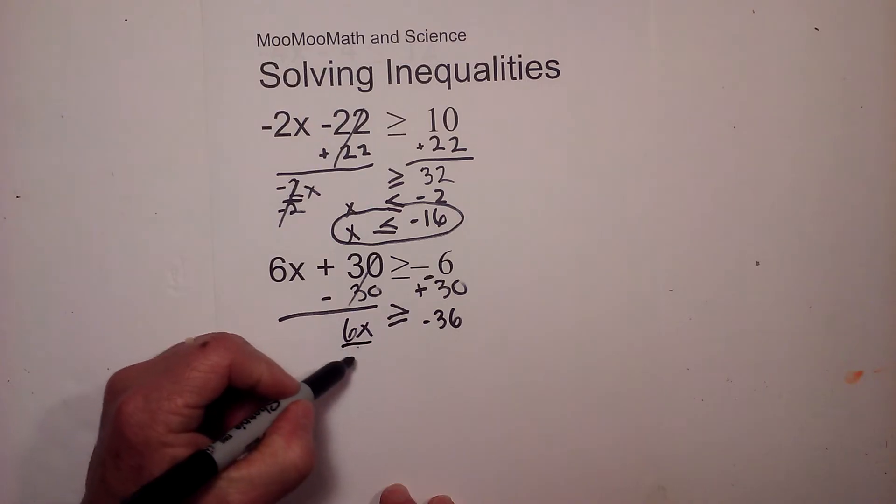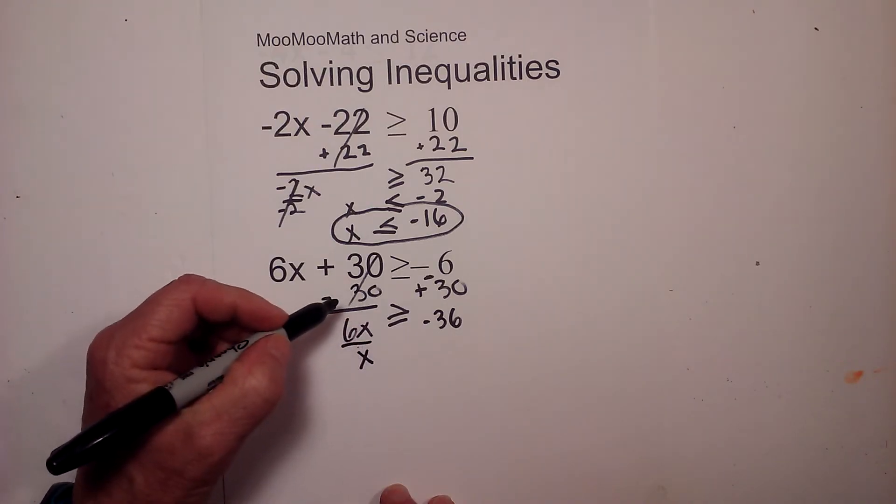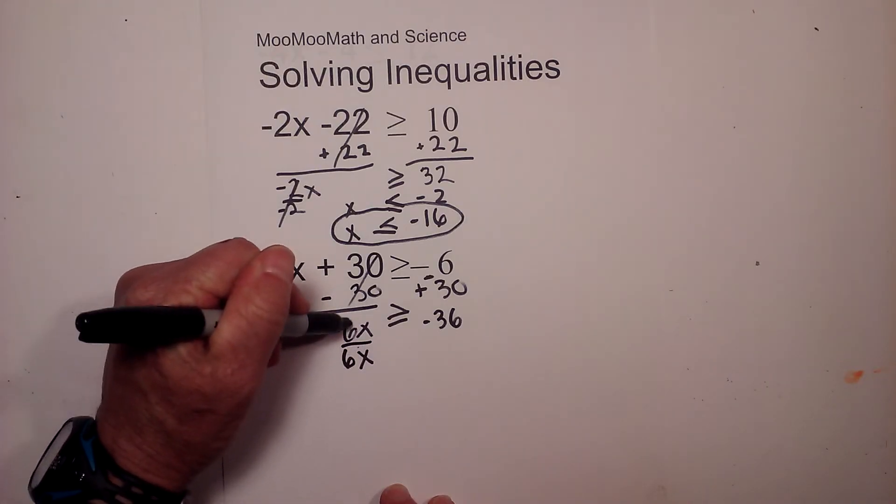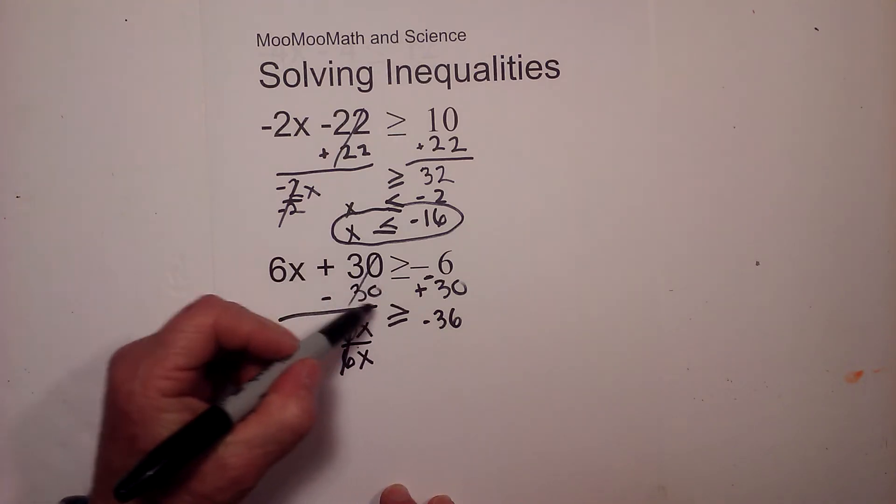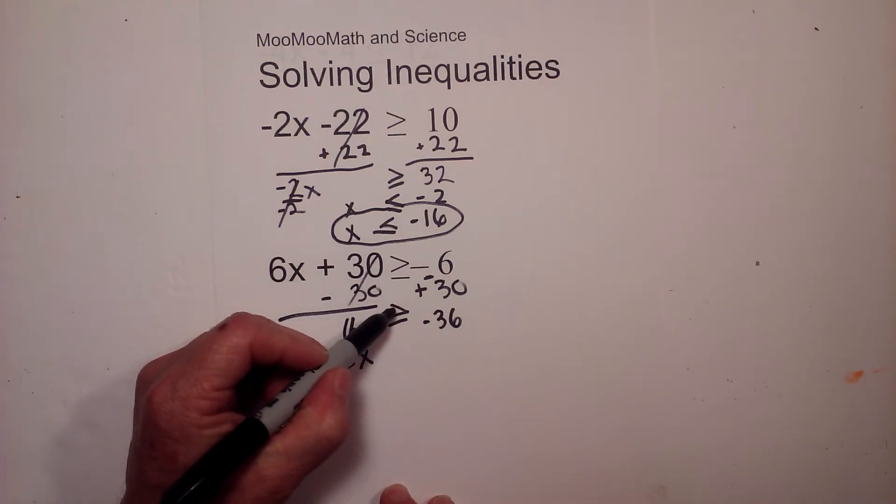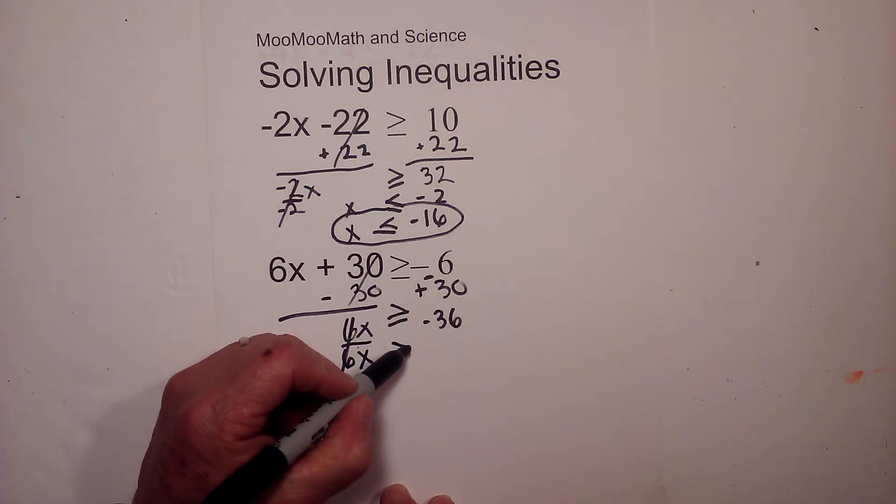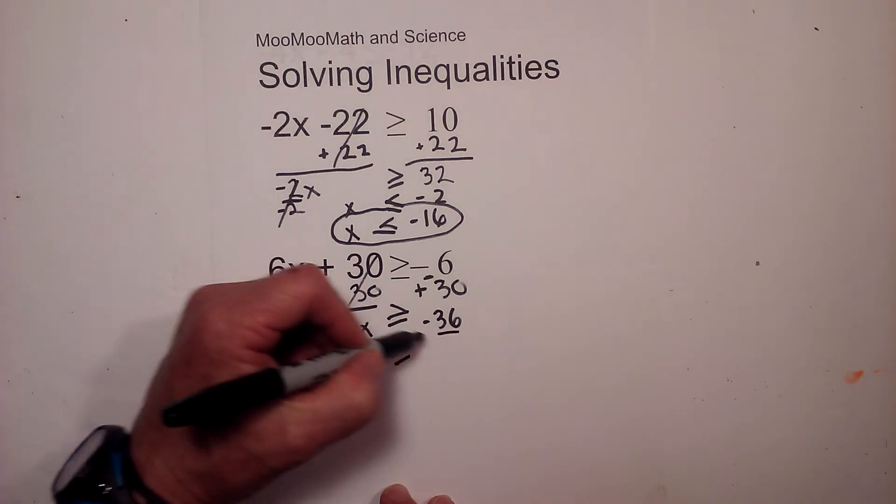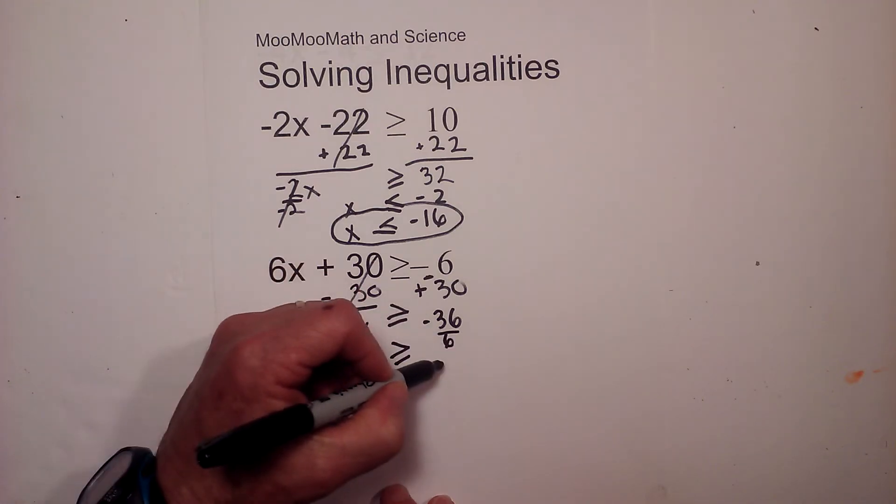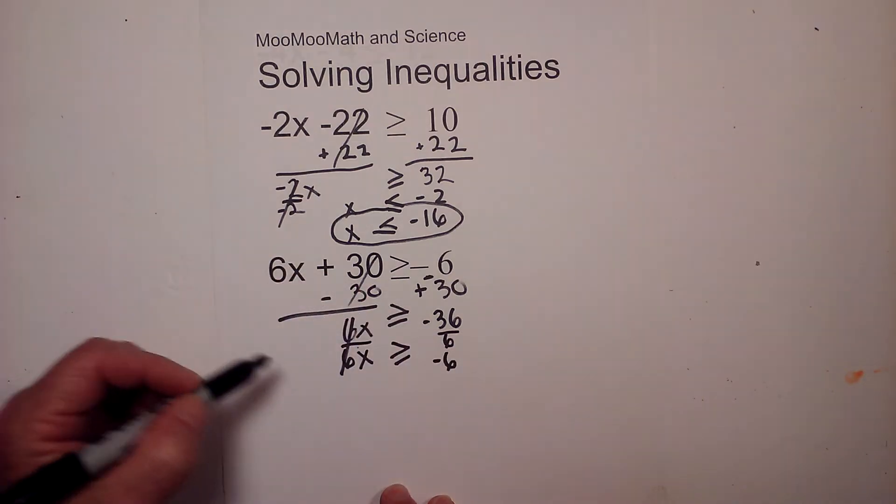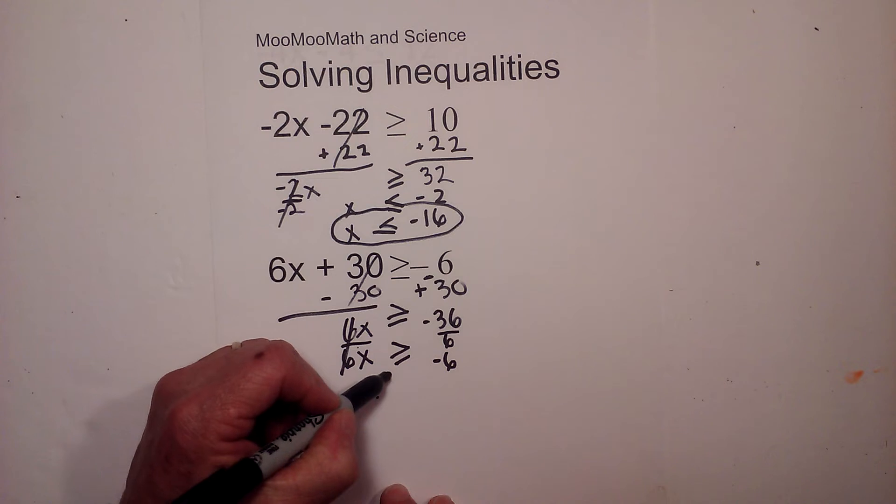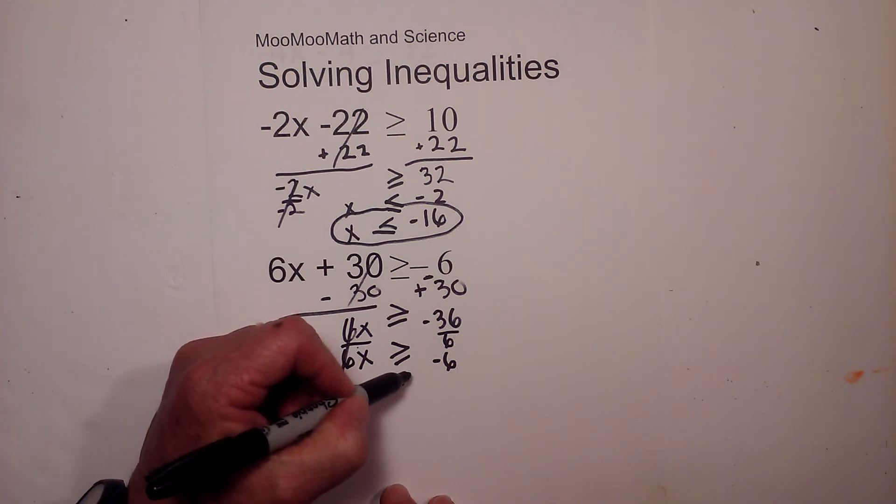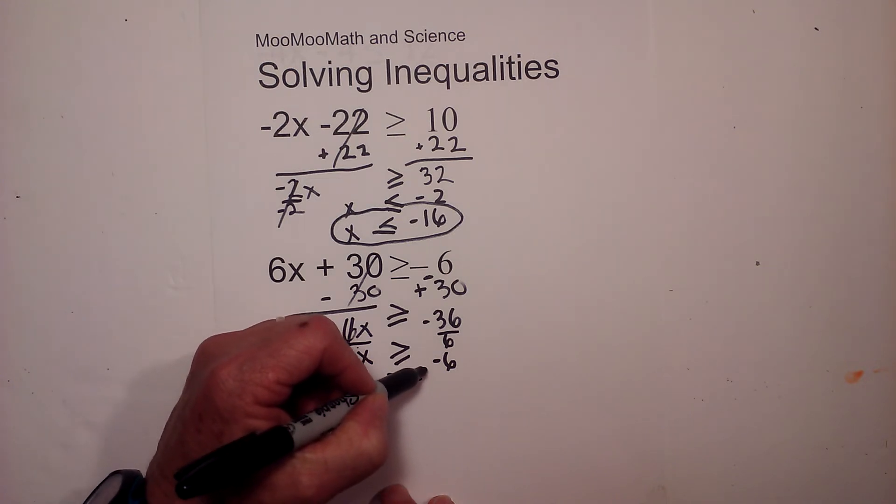I now will divide each side by 6. And so these cancel, that gives me 6. I do not need to switch the inequality because you are dividing by a positive number. And so 36 divided by 6 is negative 6. So the answer will be x is greater than or equal to negative 6.